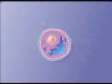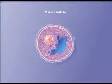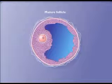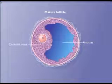The structure is called a mature follicle when the fluid-filled vesicles form a single antrum. At full maturity, the oocyte is located in the cumulus mass.